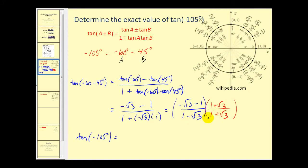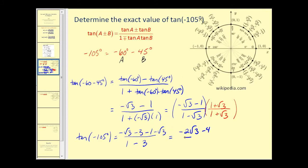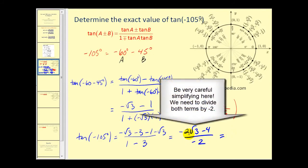Multiplying the denominator: these are conjugates, giving 1 plus square root 3 minus square root 3 minus 3, which equals negative 2. In the numerator, we get negative square root 3 minus 3 minus 1 minus square root 3, which simplifies to negative 2 square root 3 minus 4, all over negative 2. Factoring out negative 2 gives us positive square root 3 plus 2, which is the tangent of negative 105 degrees.